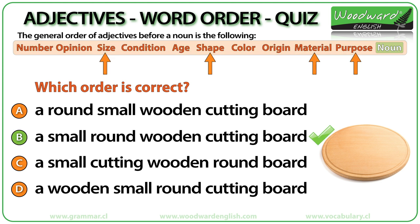A small round wooden cutting board. Small refers to size, round is a shape, wooden is the material — wood — and the purpose of the board is for cutting. The correct order is: size, then shape, then material, then purpose.